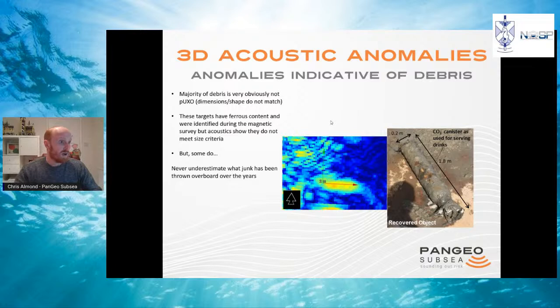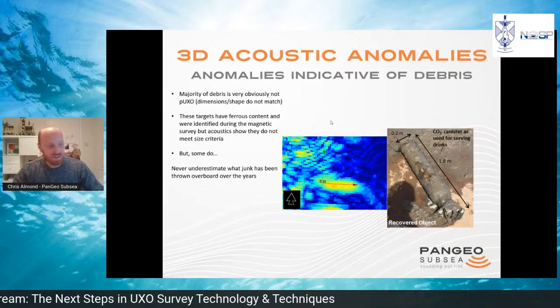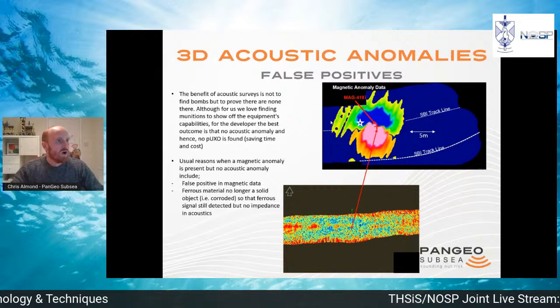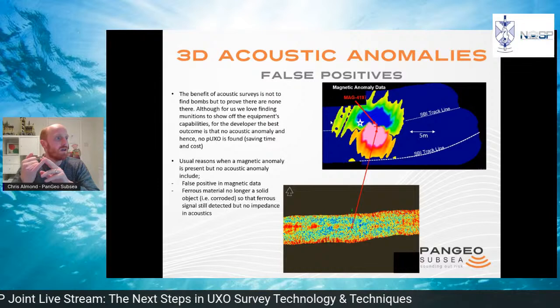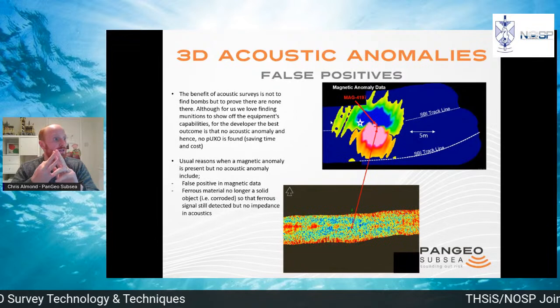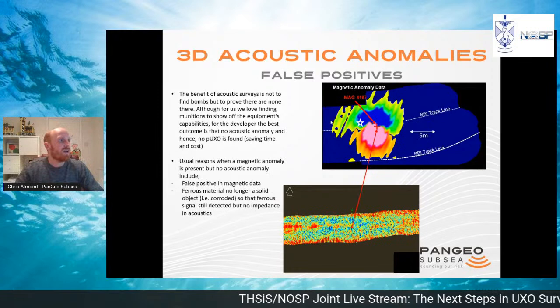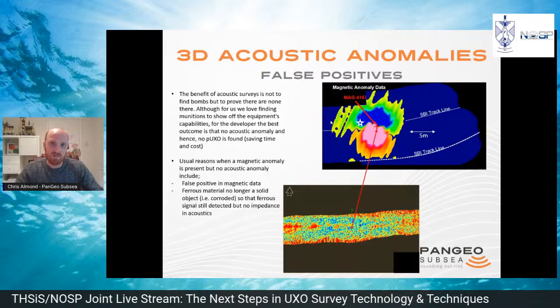It is astonishing what has been thrown over the side of boats over many years. On occasions there are targets that match the shape and dimensions of munitions but clearly don't represent them — in one case, a CO2 gas canister. The third way acoustics reduces the target listing is by identifying false positives from the magnetic data: a magnetic signature that doesn't actually represent a target.